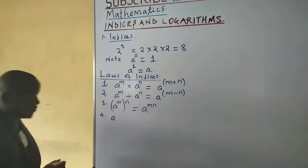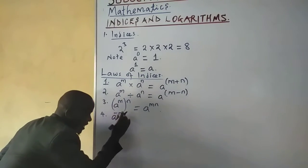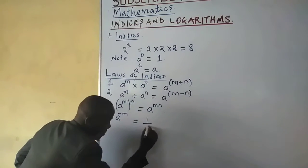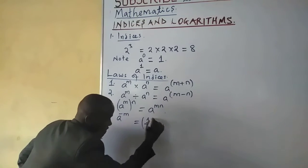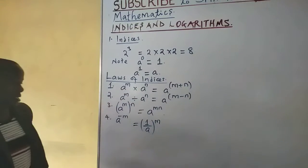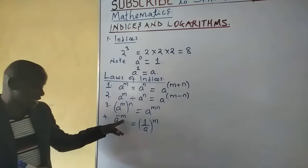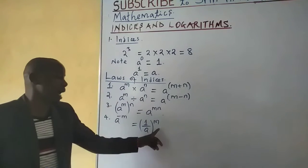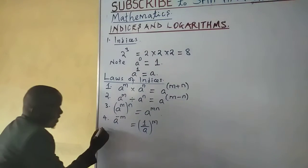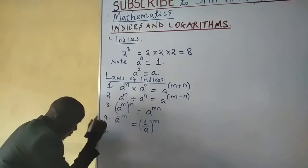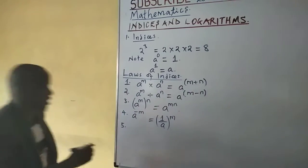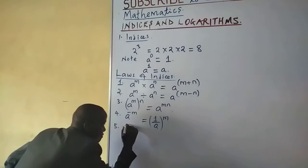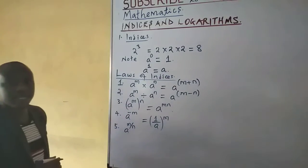The negative law says that when you have a number a raised to a negative index m, the result is you take the reciprocal of a and the power becomes positive. So a number raised to a negative index gives 1 over the number with the power becoming positive. Lastly, the fifth law — the fraction law.